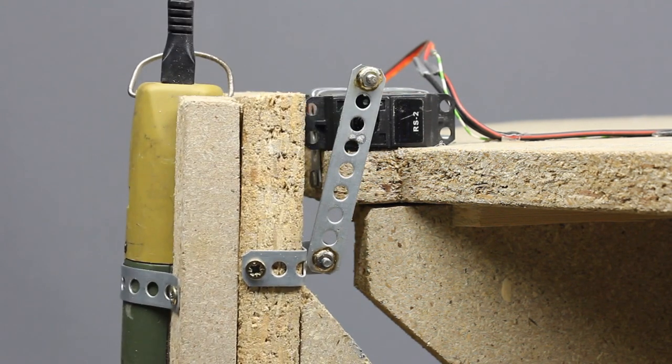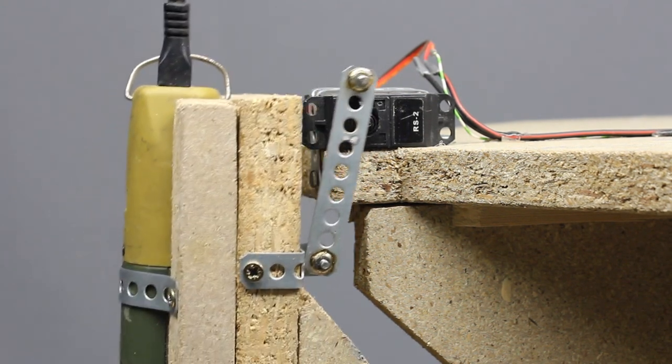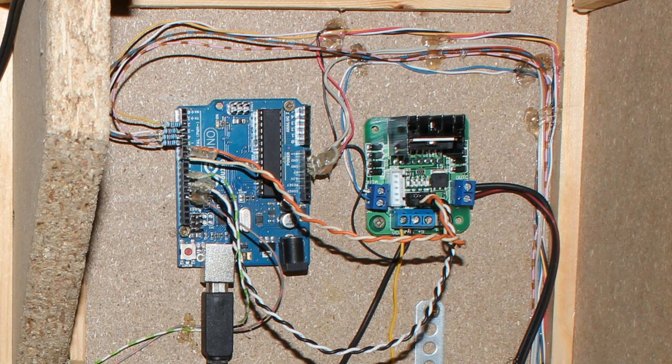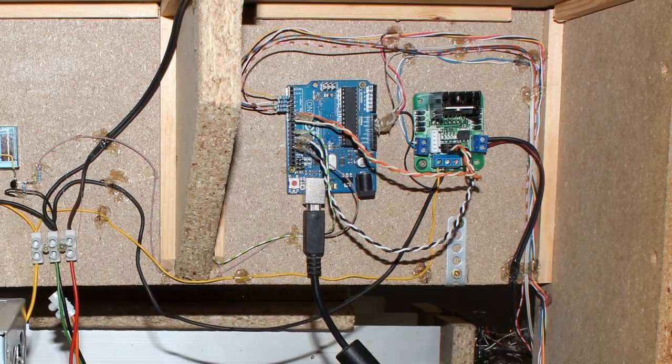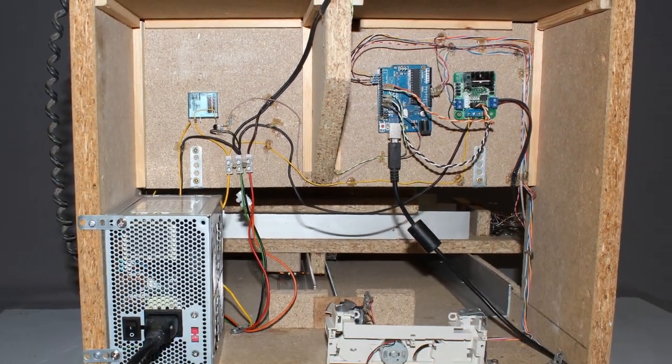The vertical axis is actuated by a standard servo. The electronics consisting mainly of an Arduino Uno and a double H bridge is mounted at the backside of the machine. An old computer power supply feeds the machine with electricity.